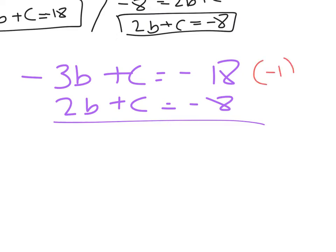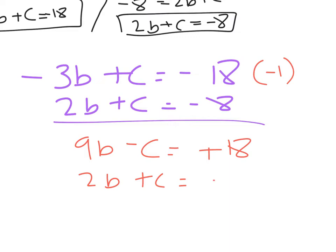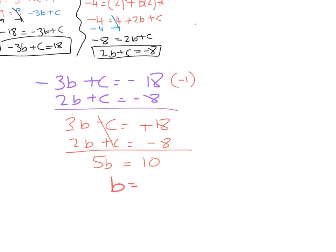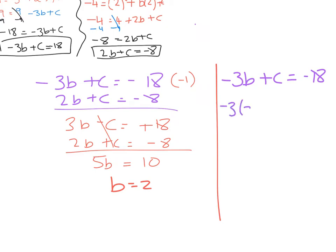I'm going to multiply the top line by minus 1, which gives me 3b minus c equals 18. The bottom equation is 2b plus c equals minus 8. Adding them together, the c terms cancel, and 3b plus 2b gives 5b equals 10, so b equals 2. Substituting back into equation one: minus 3 times 2 plus c equals minus 18, so minus 6 plus c equals minus 18, giving c equals minus 12.